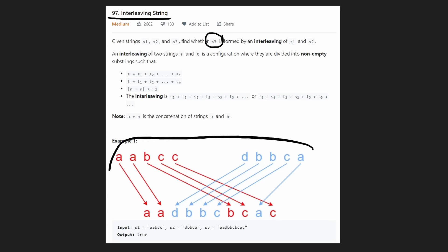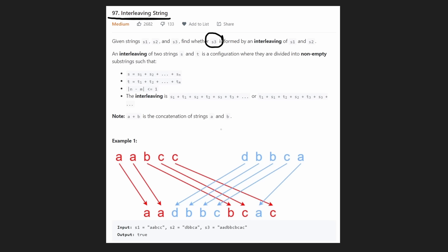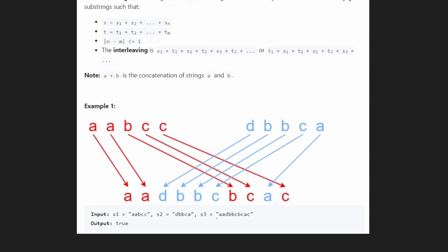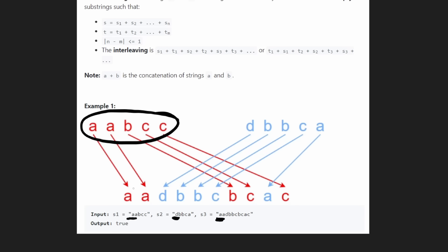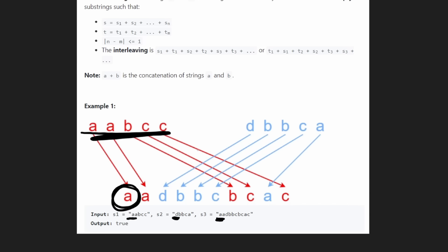Once you understand what an interleaving string actually is, the logic of this problem isn't too complicated. For example, we see that the first character in string three is A, so we need at least one of the characters from s1 or s2 to start with an A, because the relative order of each of these strings has to be maintained. We can see that the first string does start with an A.